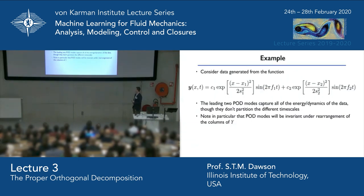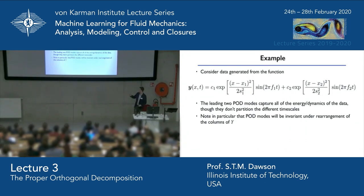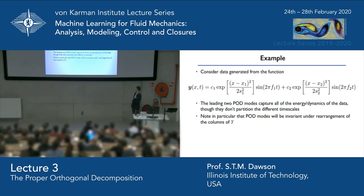One way to see why this occurs is that the POD modes themselves would be the same if we completely rearranged our data in time. The identification of the basis for our spatial modes doesn't have anything to do with the temporal dynamics. That's a function of how we're arranging and decomposing our data — which is good if we don't have time-resolved data, because we can at least get spatial modes without needing temporal information.